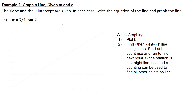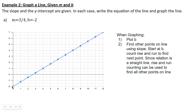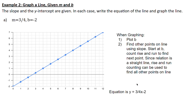Here's the graph. We start at the y-intercept of negative 2, then rise by 3 units — 1, 2, 3 — and run by 4 units — 1, 2, 3, 4. We land on the line. Connecting a line from here through gives us all the points in between. The equation is y equals three quarters x minus 2.